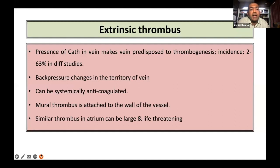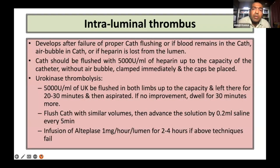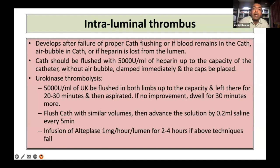Mural thrombosis is typically attached to the wall of the vessel, and similar thrombus in the atrium can be large and sometimes life-threatening when it gets dislodged from the catheter and can cause pulmonary embolism. Intraluminal thrombus develops after failure of proper catheter flushing, or if blood remains in the catheter, there is presence of air bubble in the catheter, or if heparin use is inadequate. Catheter should be flushed with 5,000 units per ml of heparin up to the capacity of the catheter, and should not contain any air bubbles. They should be clamped immediately.